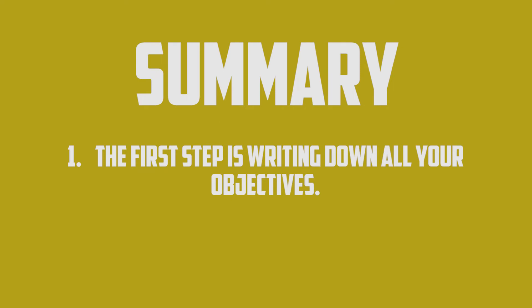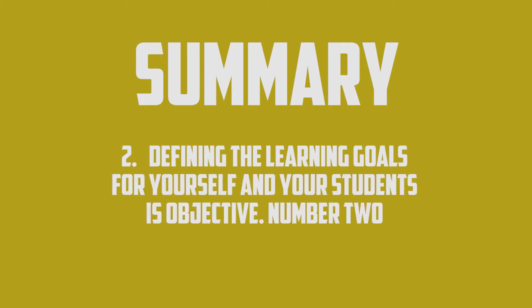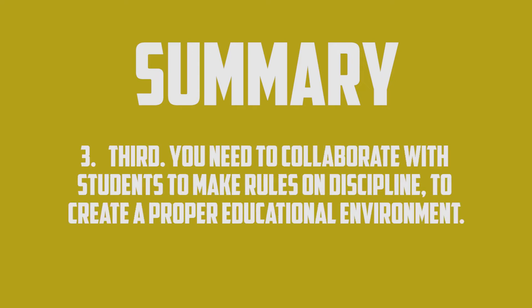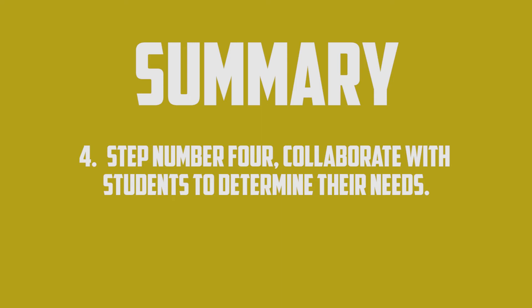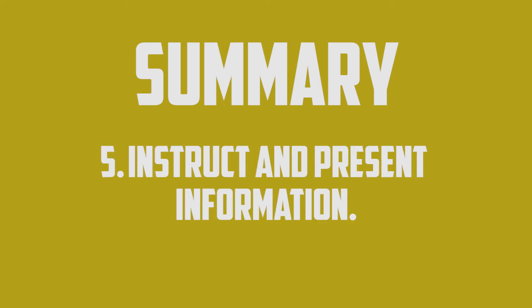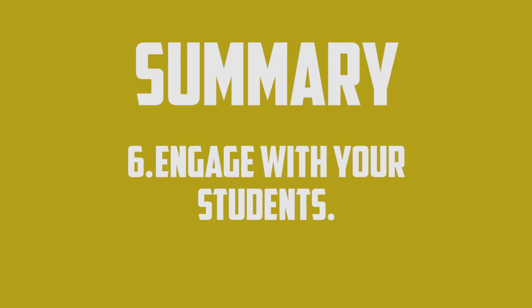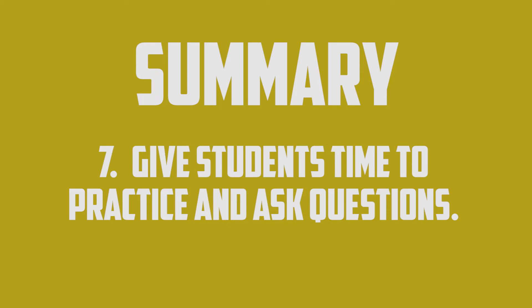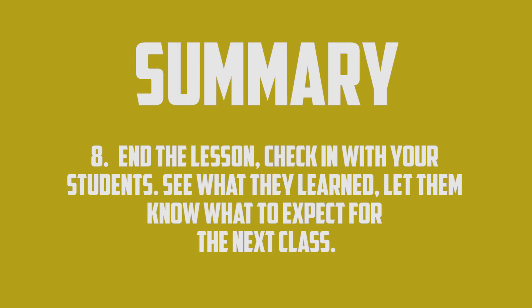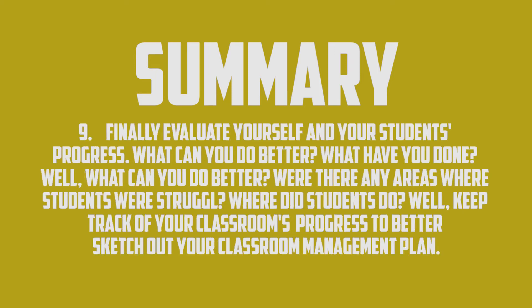Summary: The first step is writing down all your objectives. Defining the learning goals for yourself and your students is number two. Third, collaborate with students to make rules on discipline to create a proper educational environment. Step four, collaborate with students to determine their needs. Number five, instruct and present information. Number six, engage with your students. Number seven, give students time to practice and ask questions. Number eight, end the lesson — check in with your students, see what they learned, and let them know what to expect for the next class. Finally, evaluate yourself and your students' progress: What can you do better? What have you done well? Were there any areas where students were struggling? Where did students do well? Keep track of your classroom's progress to better sketch out your classroom management plan.